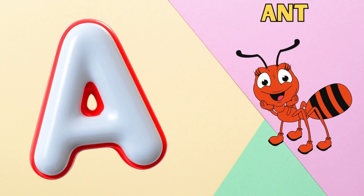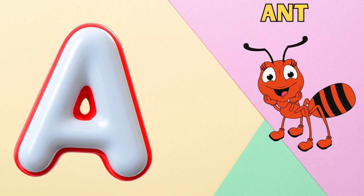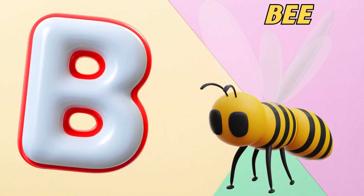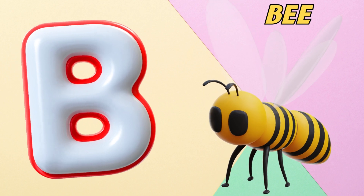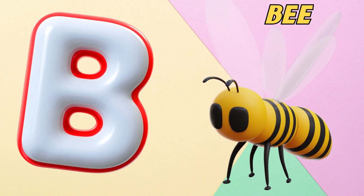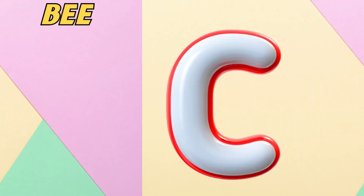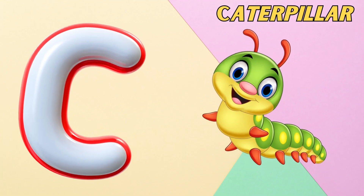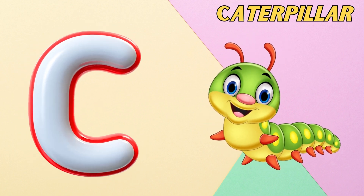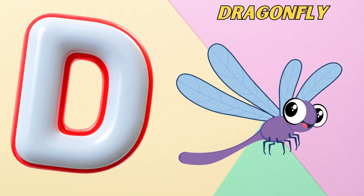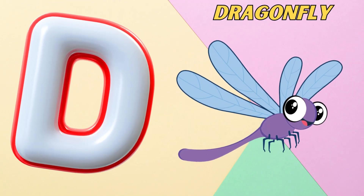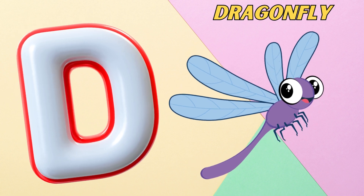A is for ant. a, a, ant. B is for bee. b, b, bee. C is for caterpillar. c, c, caterpillar. D is for dragonfly. d, d, dragonfly.